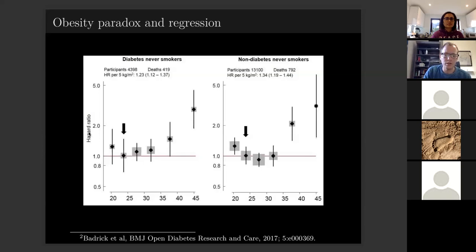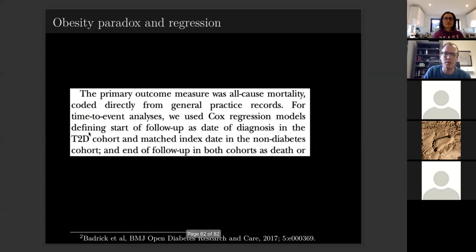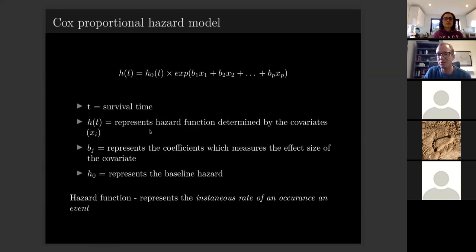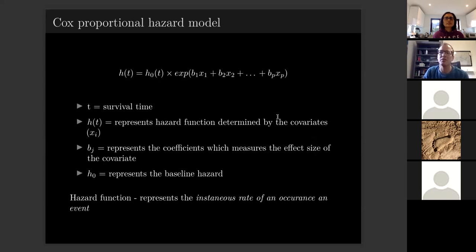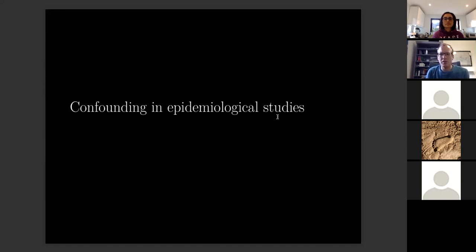This obesity paradox study used a Cox proportional hazard model rather than linear regression, but the Cox model is really just a linear regression model with a few additional terms — the same principles apply. Including these variables adjusted out all the bad consequences of obesity, finding that a BMI of around 35 had no overall difference in hazard ratio. All these models, whatever they're called, can produce these somewhat counterintuitive interpretations when you over-adjust.